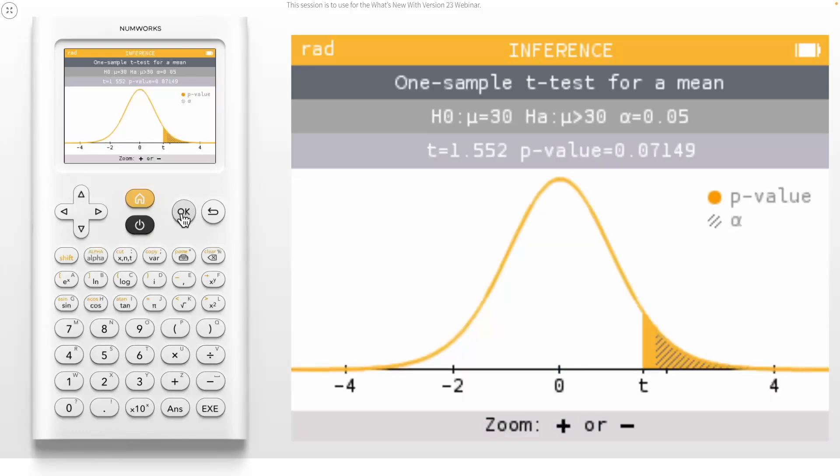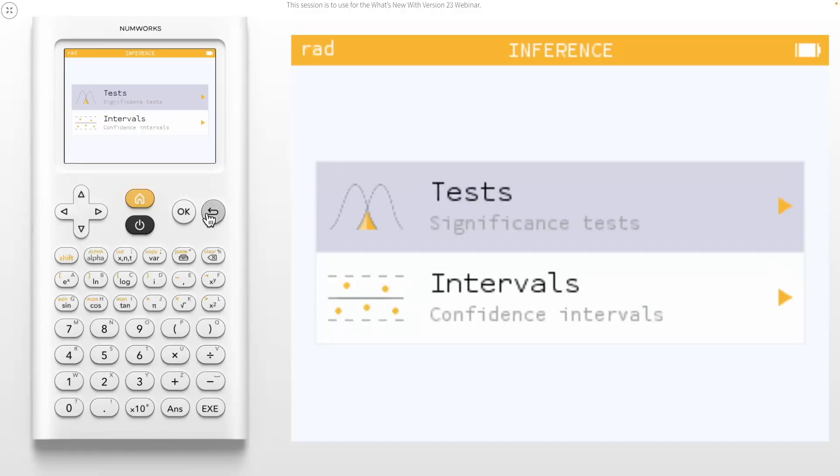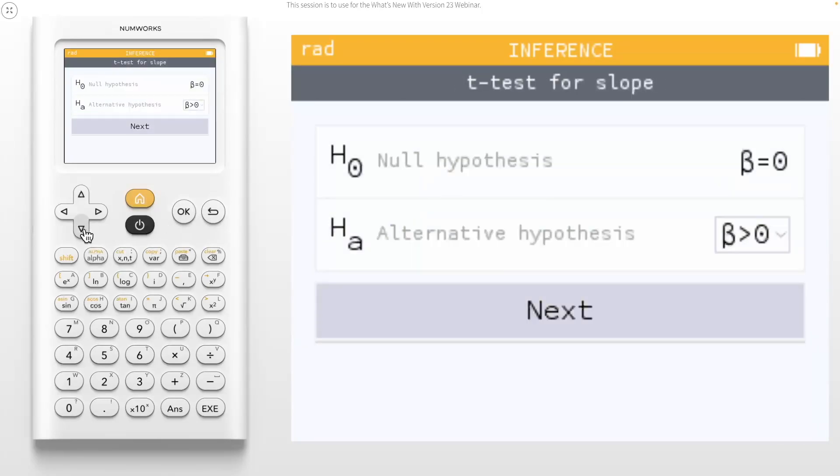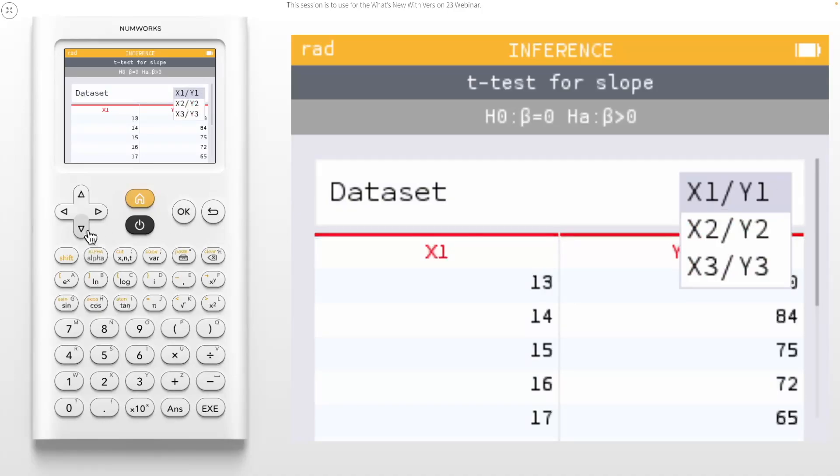This Use a Data Set feature has been added to all 1 and 2 mean significance tests and confidence intervals. We've also updated the t-tests for slope and t-interval with the option to select any data set from regression, not just x1, y1.